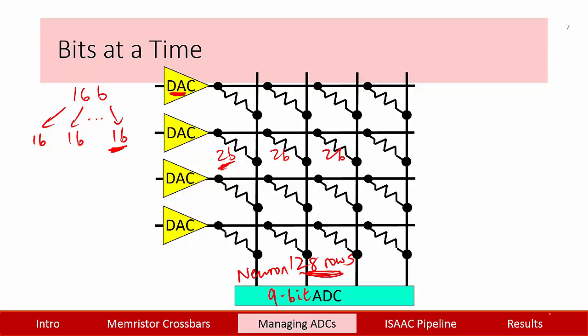To further reduce the ADC requirement, we encode the weights. Take this example. If all the weights were their max value of 3, done for 128 rows, you would eventually get a sum of 384, which requires a 9-bit ADC.